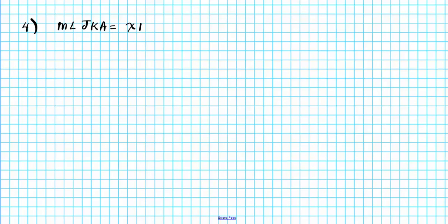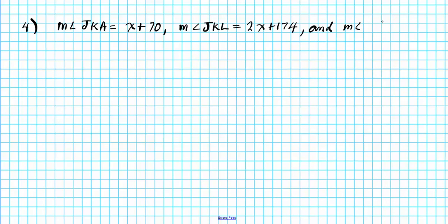Let's take a look at question number 4. The measure of angle JKA is equal to the expression x plus 70, the measure of angle JKL is the expression 2x plus 174, and the measure of angle AKL is 104. We are asked to find the measure of angle JKL.